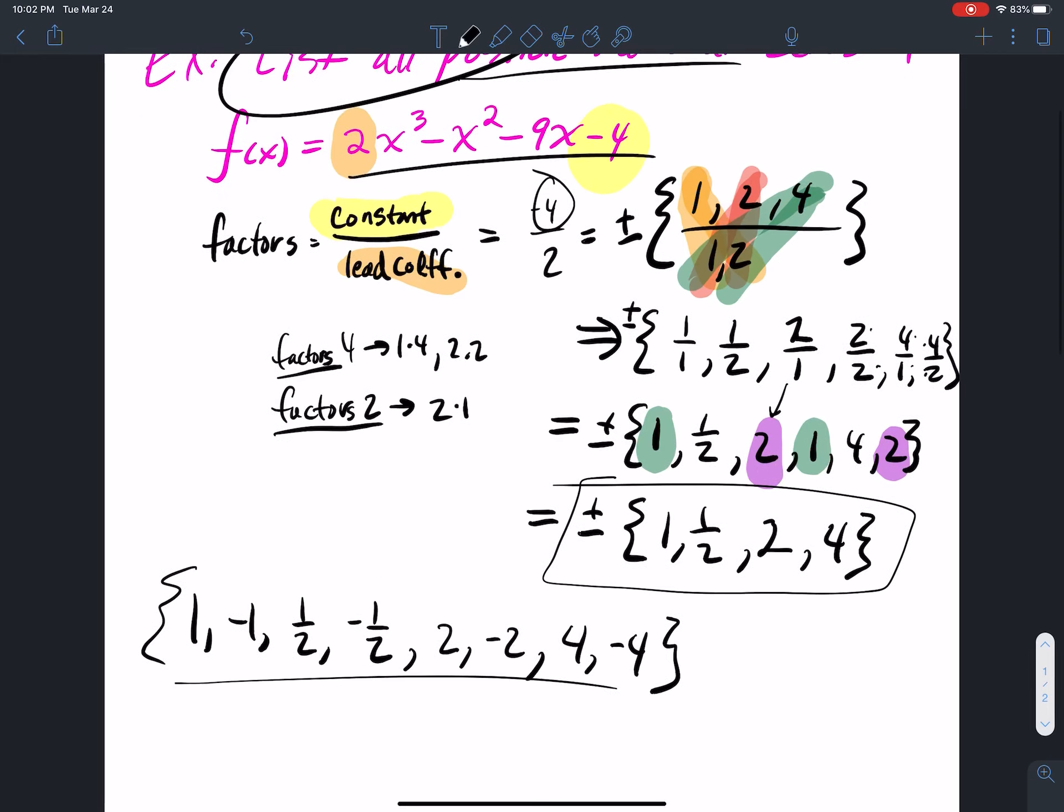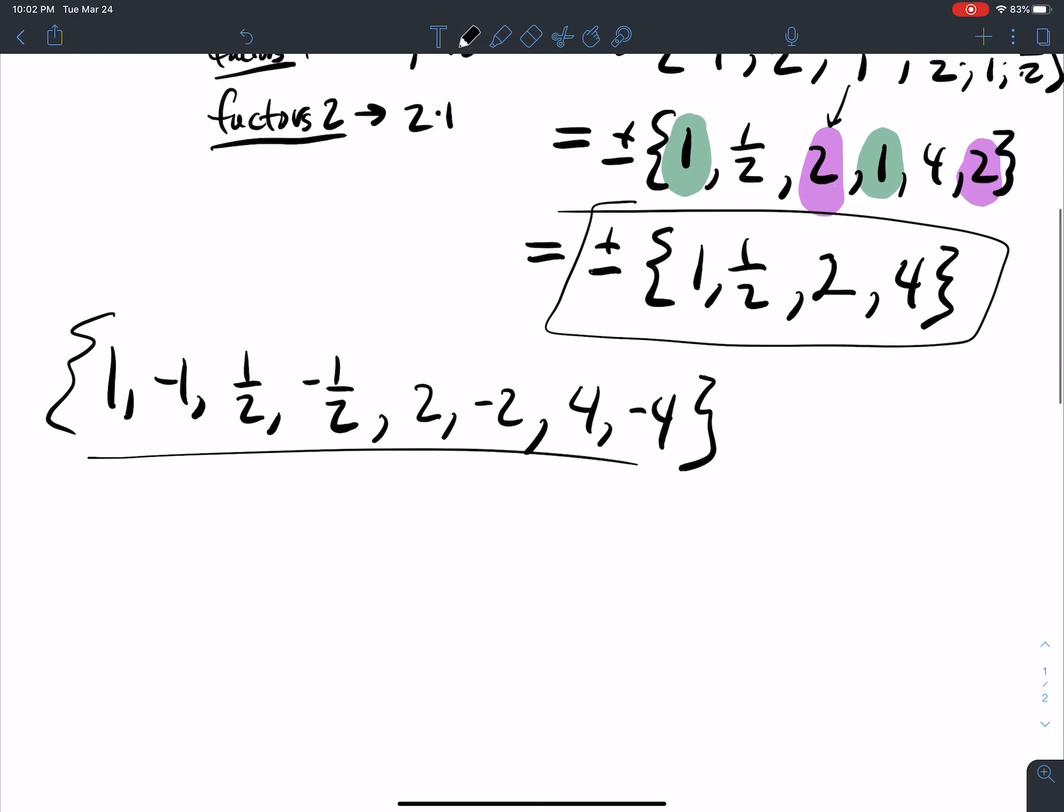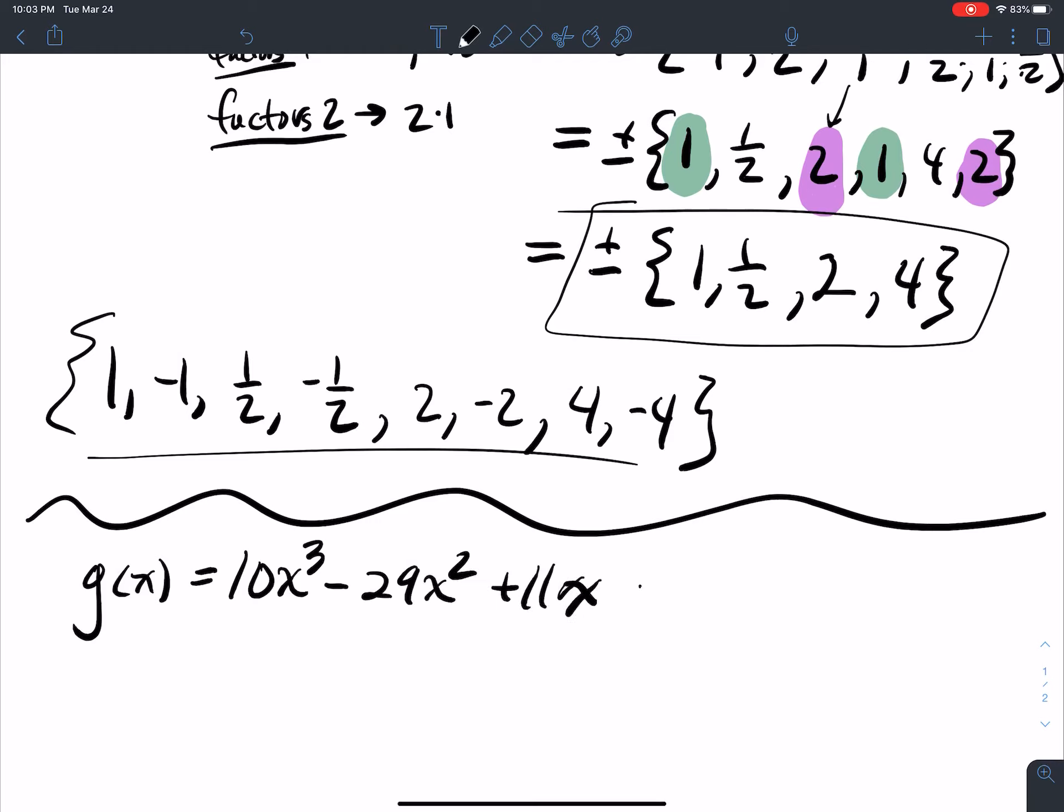We can do one more just to make sure that we got it going on. So let's try one more. Let's do one that's a little bit more complicated. G of x equals 10x cubed minus 29x squared plus 11x plus 14.